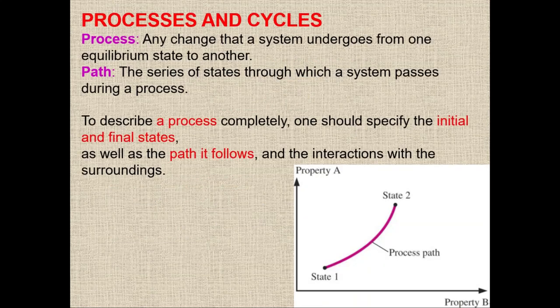Last time I told you about state — state is basically a set of fixed properties, and whenever there is a change in any property, the state will change. So what is a process? Simply, a process is any change that a system undergoes from one equilibrium state to another. With the help of a process, the state will change from one point to another.